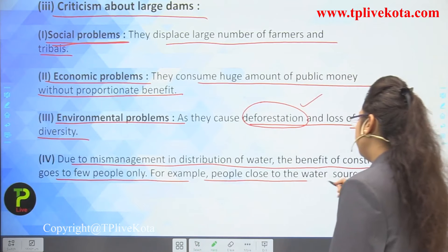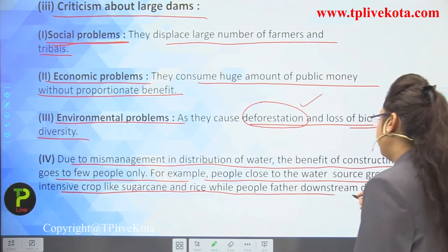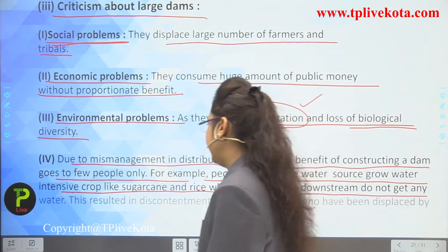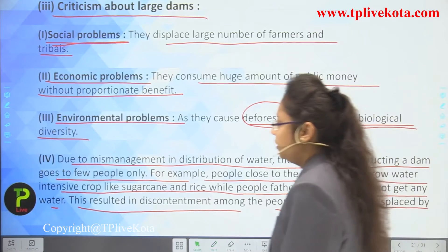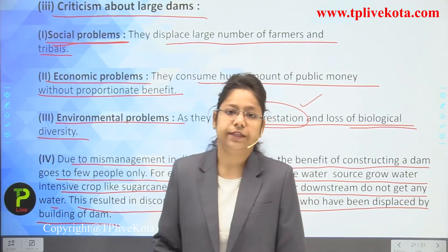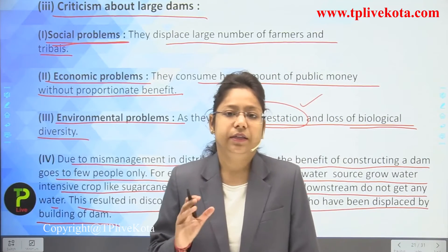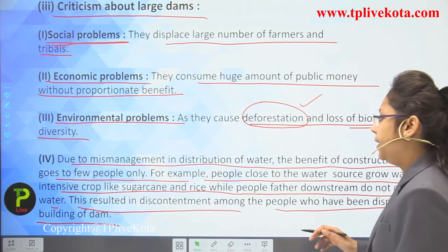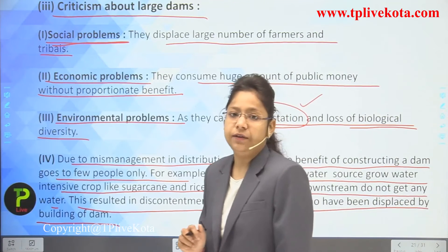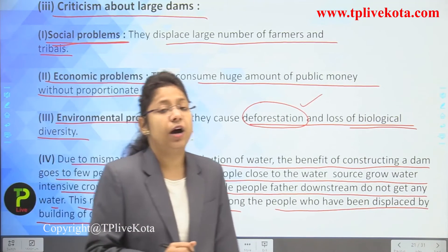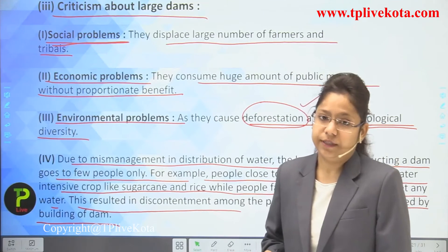Due to mismanagement in water distribution, the benefit of a dam goes to only a few people. People close to the water source grow water-intensive crops like sugarcane and rice, while people farther downstream get no water. This results in discontentment among people displaced by the building of a dam.